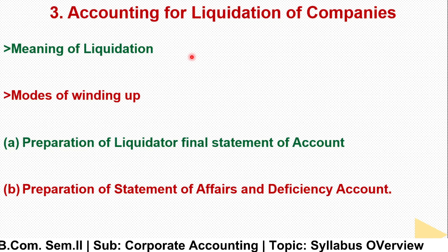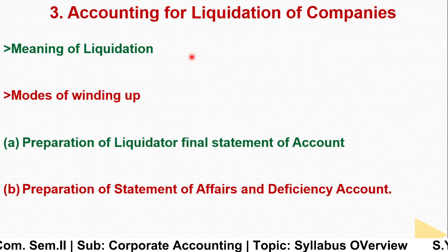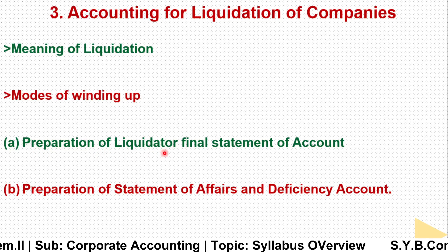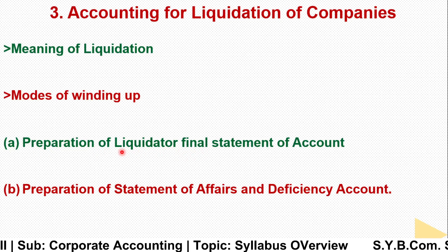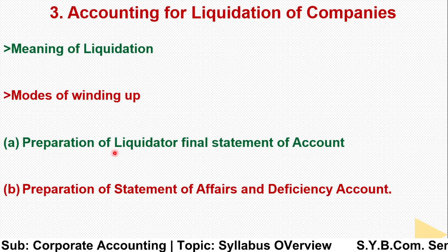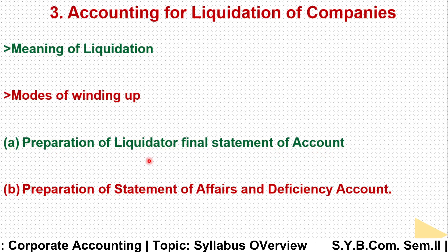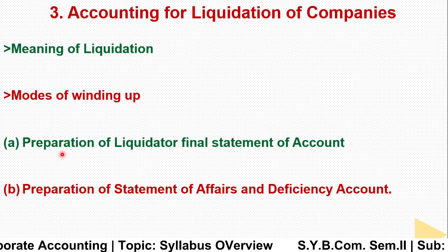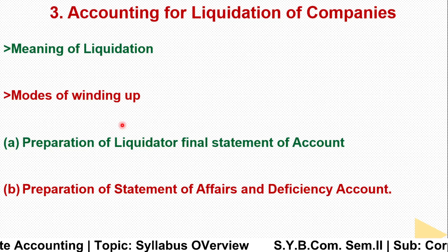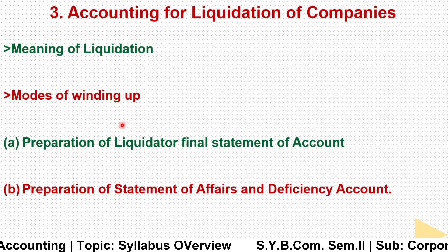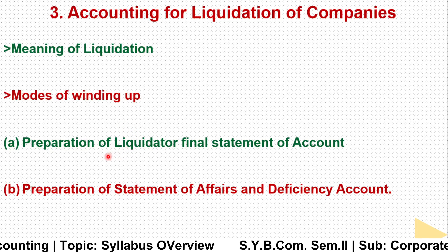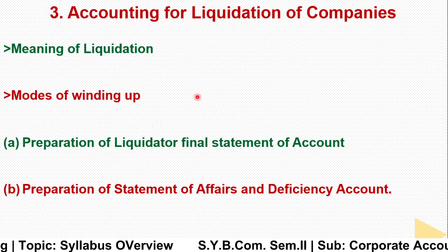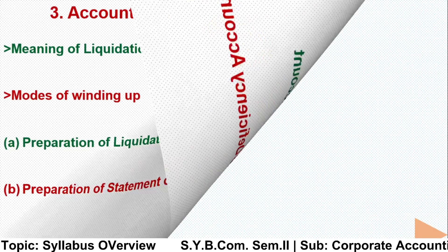The priority of payment is given by the Companies Act 1956 and 2013. According to that priority, the liquidator prepares the final statement of account. The liquidator is the appointed person who receives remuneration, sells all assets, investments, and stock in the market, and from the proceeds pays all liability holders. This entire process is called liquidation of a company.